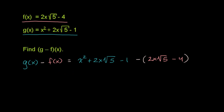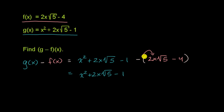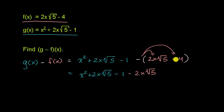So this is equal to x squared plus two x times the square root of five minus one. And now we just have to distribute this negative sign. Negative one times two x times the square root of five gives us minus two x times the square root of five. And then the negative of negative four is positive four.